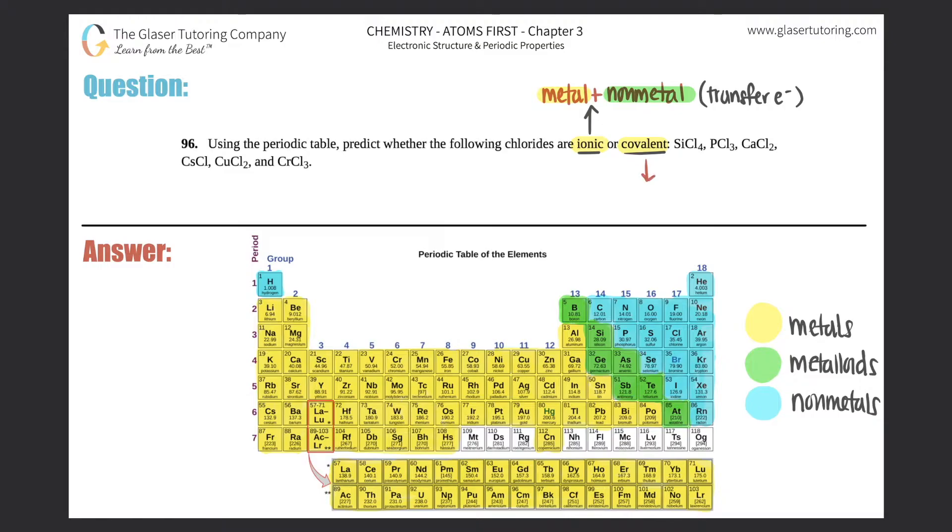Covalent compounds are no metals are involved. It's always going to be a non-metal plus another non-metal. Once again, does it have to be two non-metals? No, it could be three or four or five, but the object here is that you don't see any metals. Covalent bonds will always be non-metal with another non-metal.